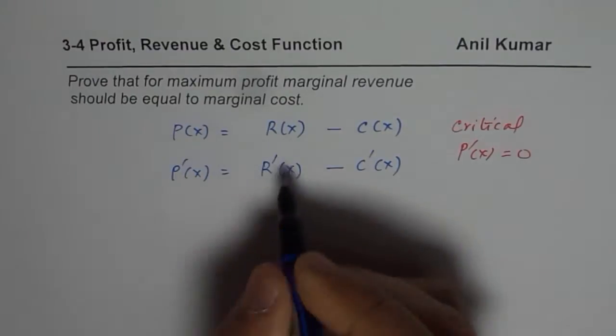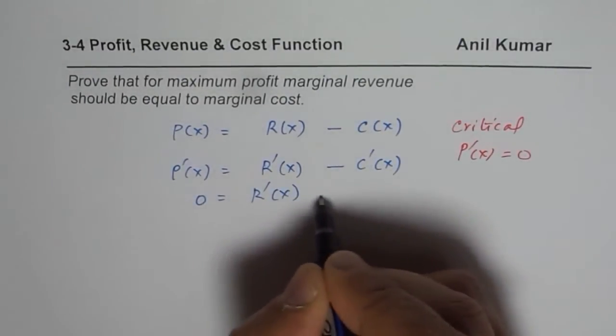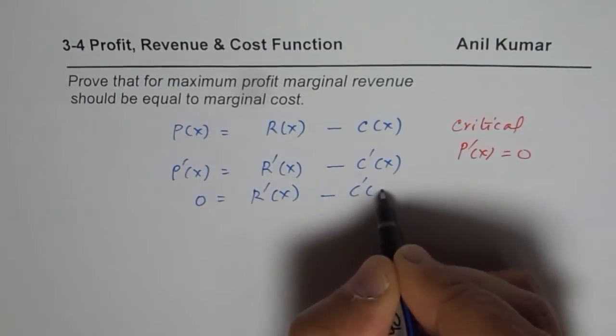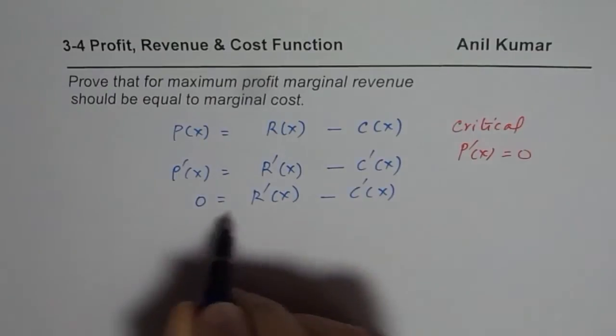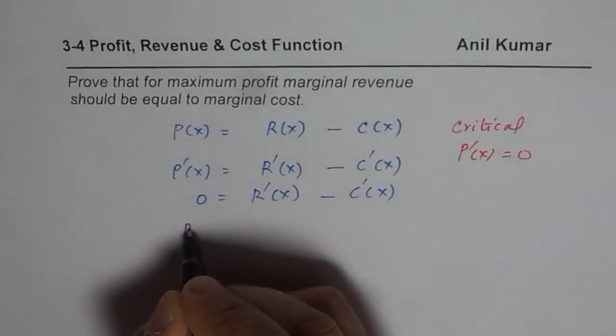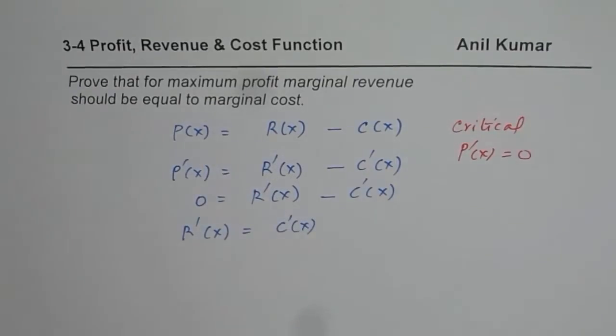So if you equate that to zero, what do we get? Zero is the difference between the marginal revenue and marginal cost. So that is possible only when marginal revenue is equals to marginal cost.